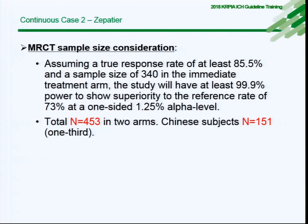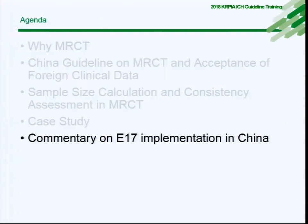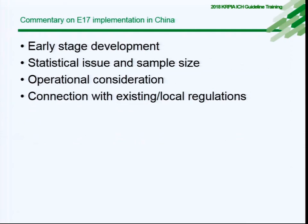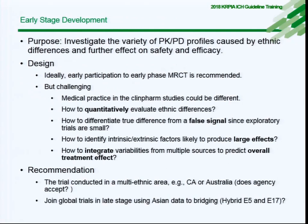The last topic is commentary on E17 implementation in China. There are four discussion areas: early stage development, statistical issues and sample size calculation, operational considerations, and connection with existing local regulations. Regarding early stage development, investigation of PK/PD profiles along with ethnic differences is quite important, and early participation in early-phase MRCT is recommended.